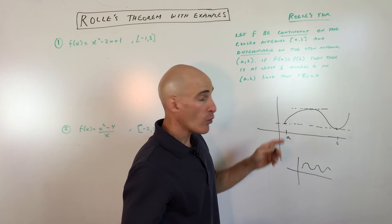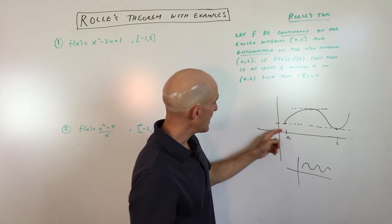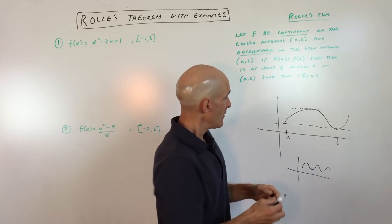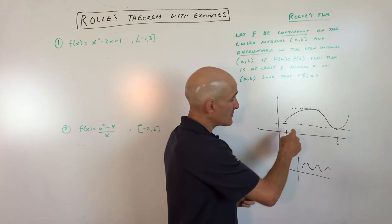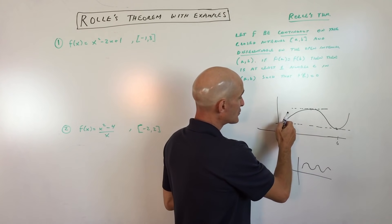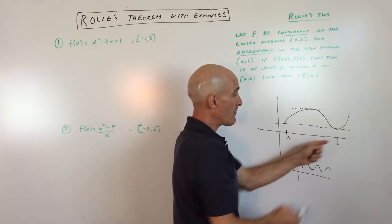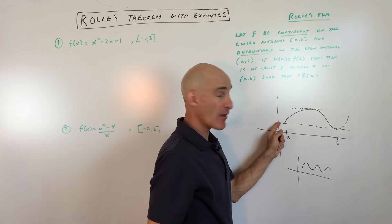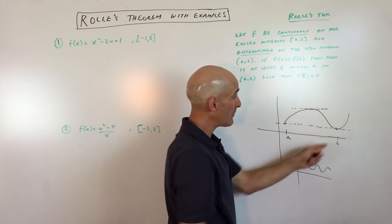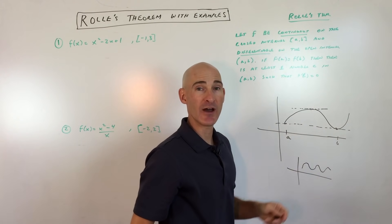But basically, the way I think about it is that if they have the same y value at a and b, you have a couple options. One, it could just be like a horizontal line. Or you could think of the graph as going to go up at some point, but then it has to come back down to get to that same height or that same y value. Or the graph could go down and then come back up to reach that same y value.